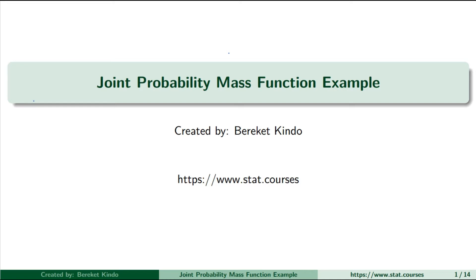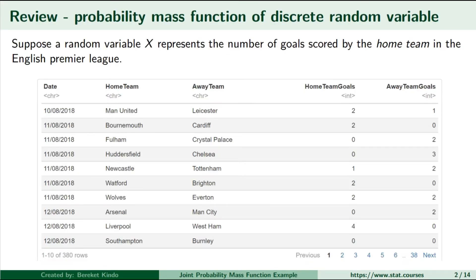This example uses football or soccer data. I encourage you to watch the lesson that introduced the concept of joint probability mass functions of two discrete random vectors. I will put a link to that.